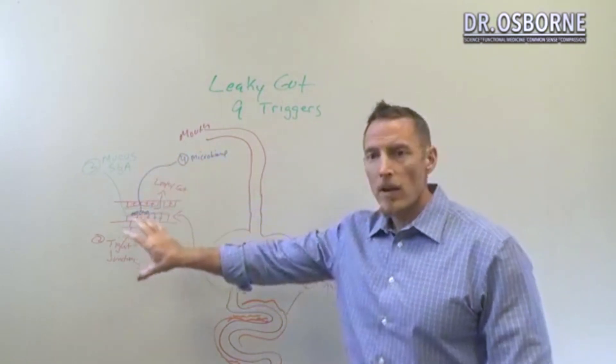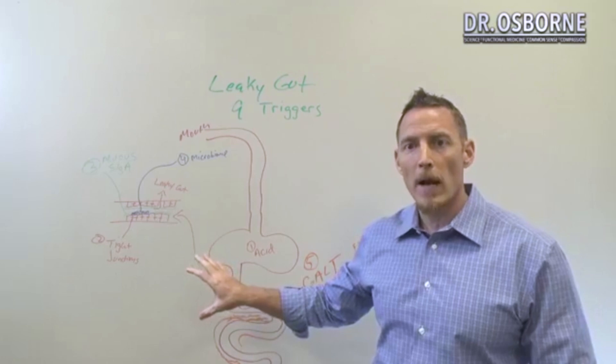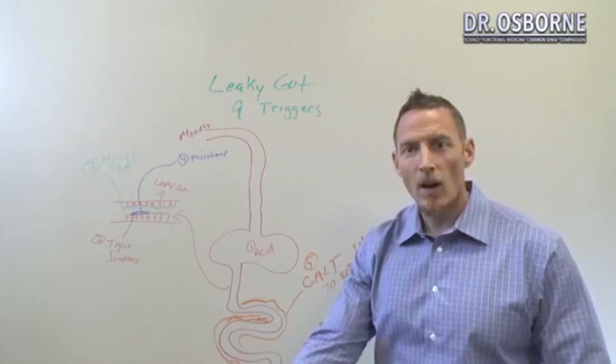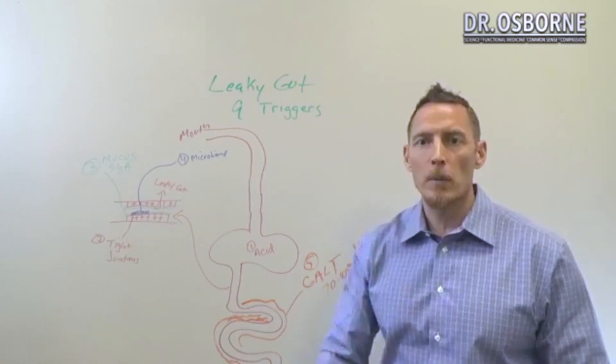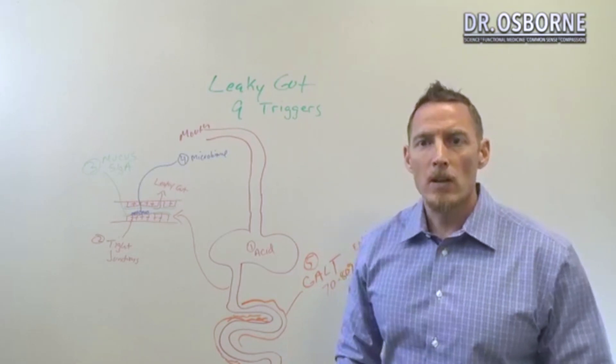So if you understand that there are these five primary barriers, you're going to understand a lot more about what kind of tests are important for leaky gut, what kind of supplements or what kind of food is going to be helpful for recovering a leaky gut.